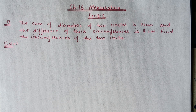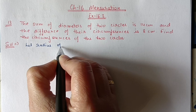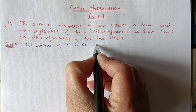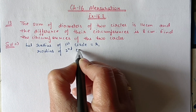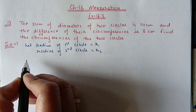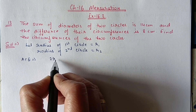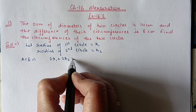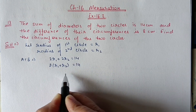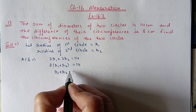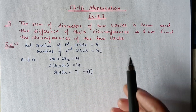Let the radius of the first circle be r1 and the radius of the second circle be r2. Now we will frame equations according to the question. For diameter: 2r1 + 2r2 = 14, taking 2 common gives r1 + r2 = 7. This is our first equation.